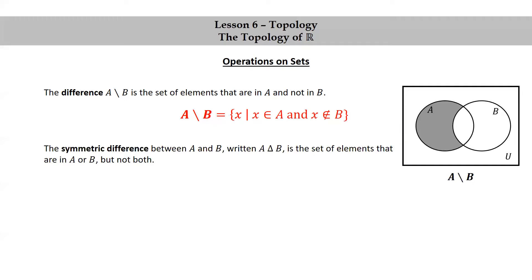The symmetric difference between A and B, written A delta B, is the set of elements that are in A or B but not both. Symbolically, A delta B is the union of the two differences — it's A minus B union B minus A.